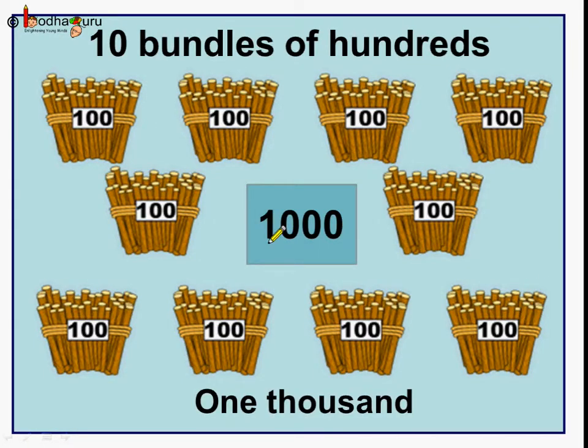We call it 1000. Look, 1000 is written as 1, 0, 0, 0. That means 1 followed by 3 zeros.